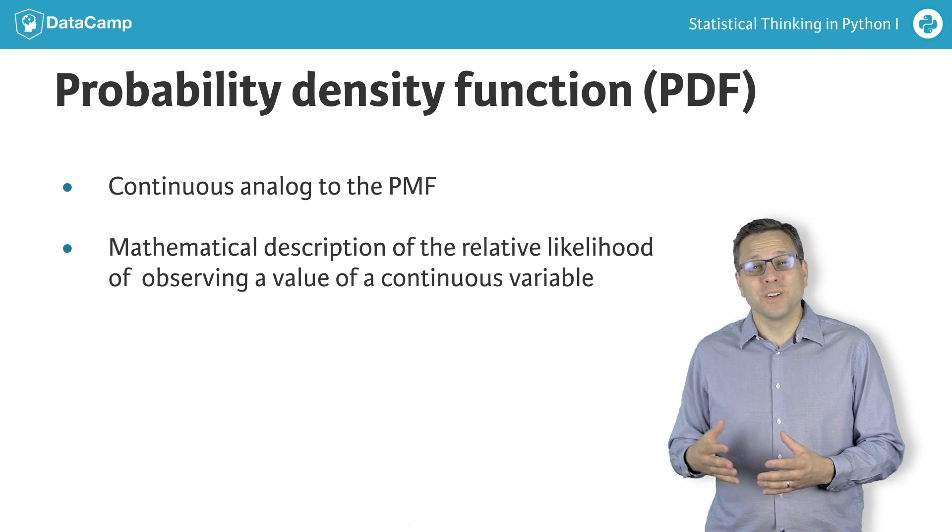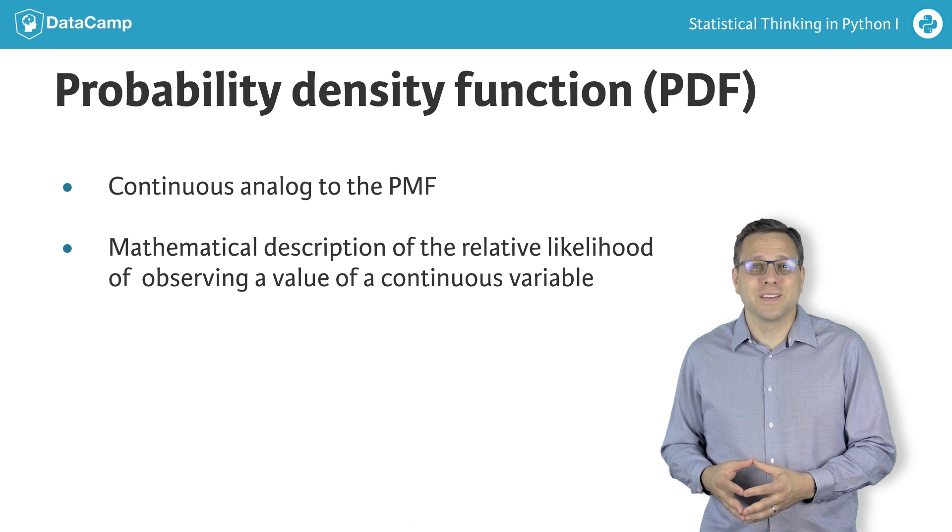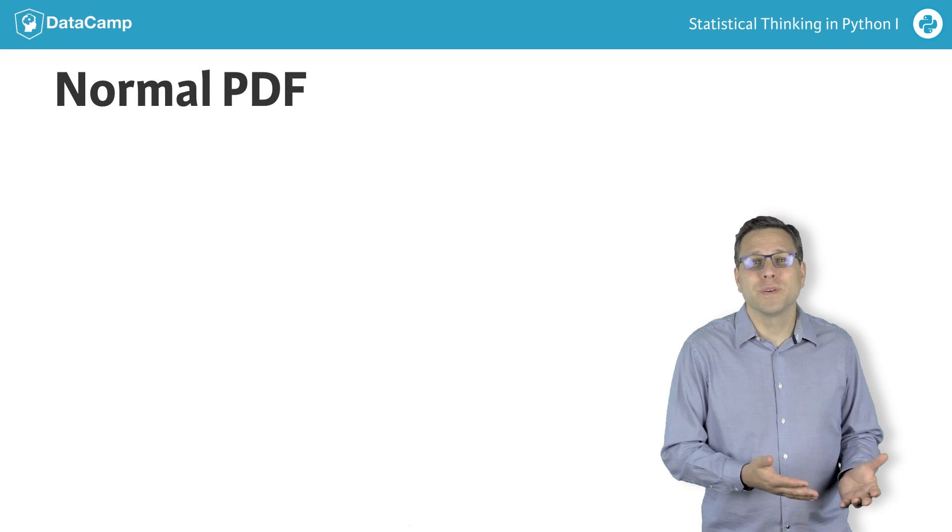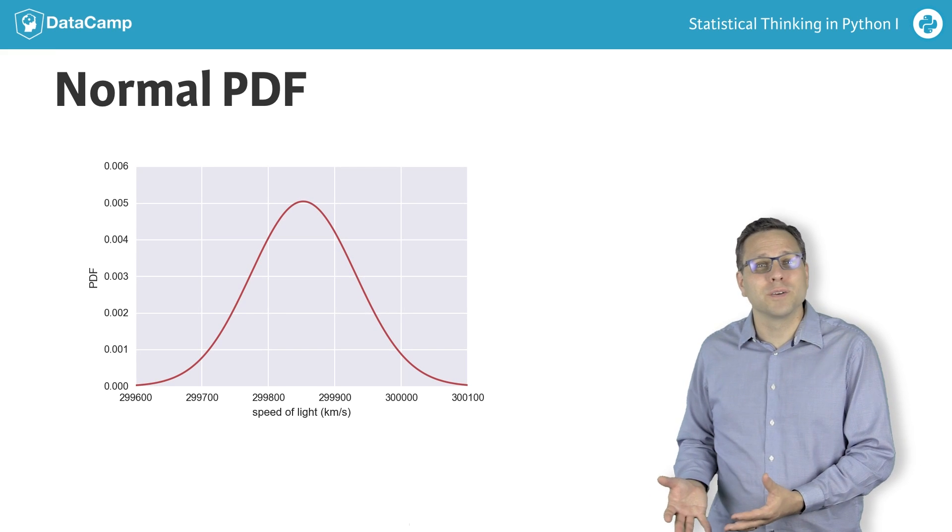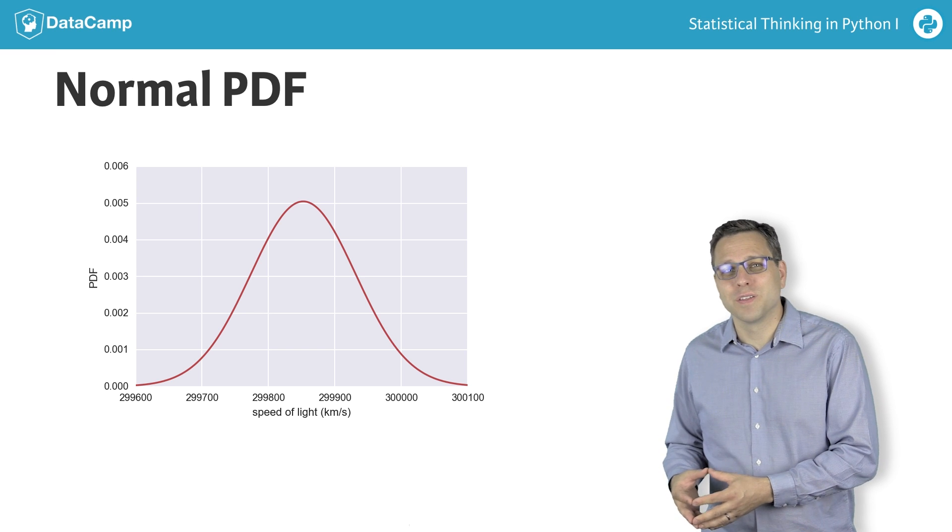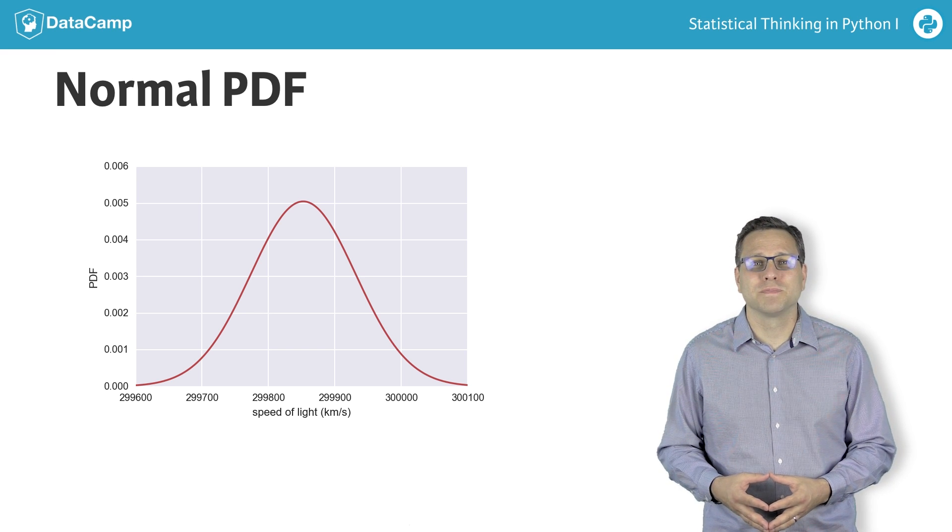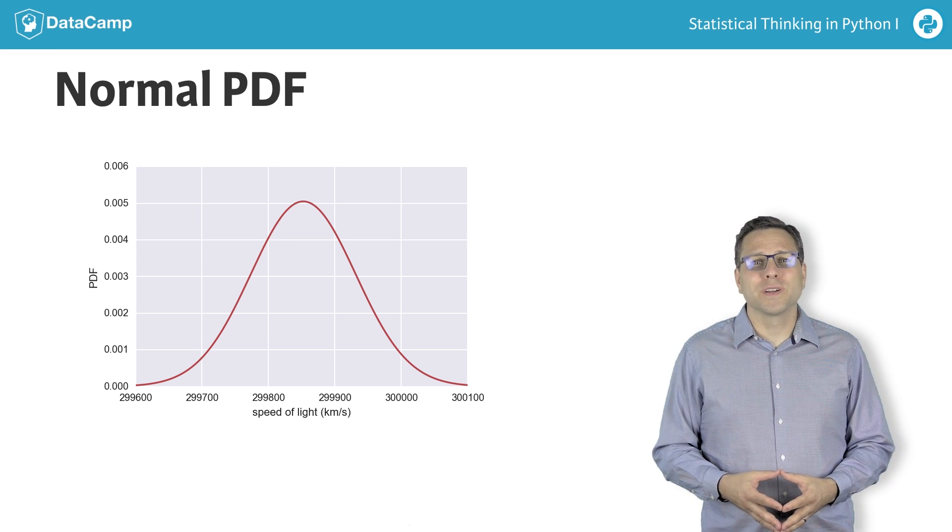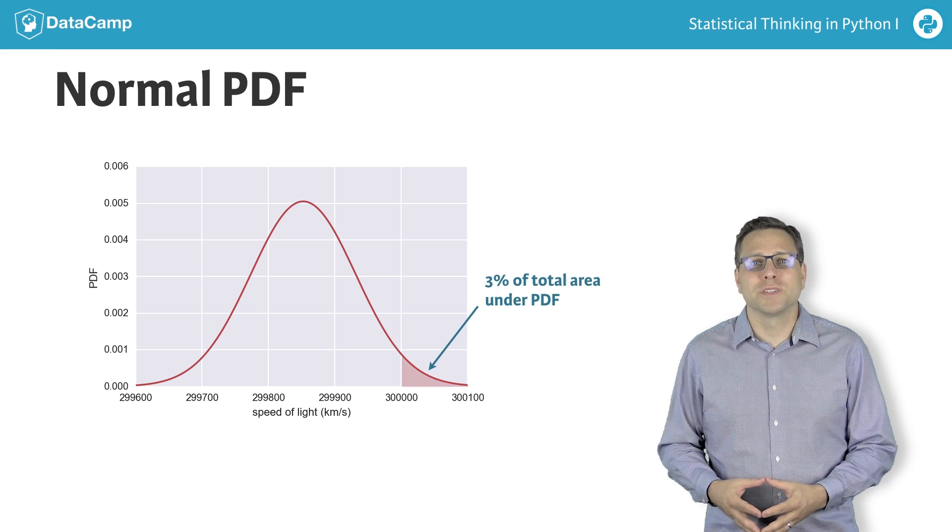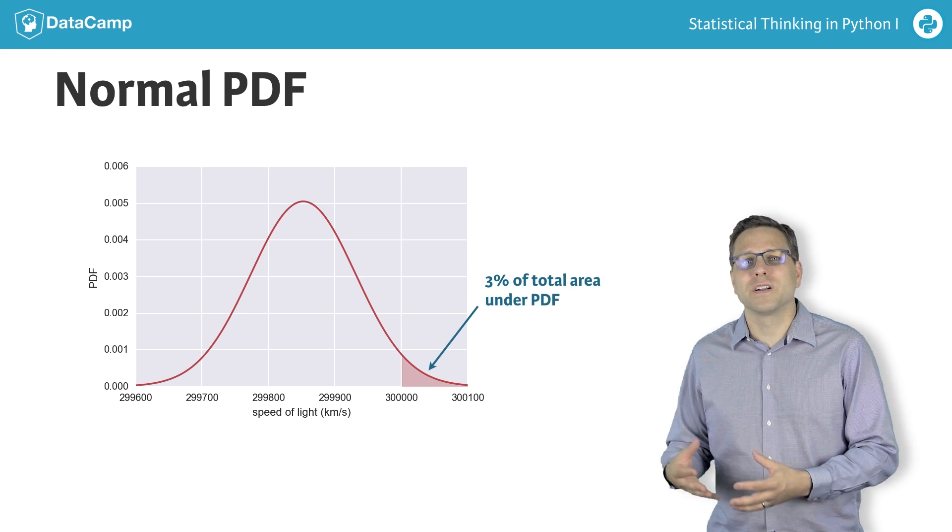The probability of observing a single value of the speed of light does not make sense because there is an infinity of numbers, say between 299.6 and 300.0 megameters per second. Instead, areas under the PDF give probabilities.